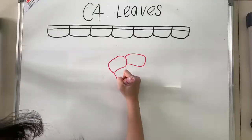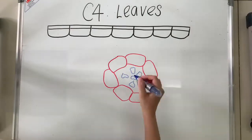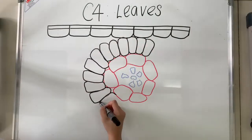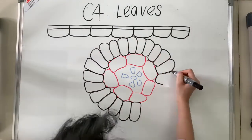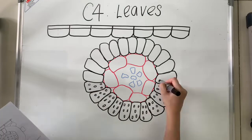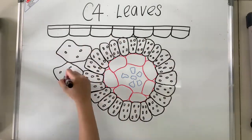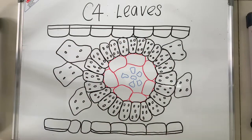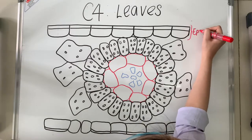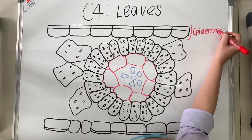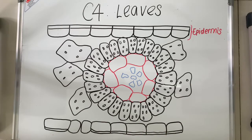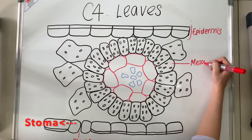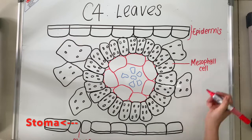Now let's move to our main point of the video: C4 plants. Let's take a look at the structure of the C4 leaves. We have the epidermis, the mesophyll cells, the bundle sheath cells, the vascular bundle, and finally, we have the stroma toward the bottom left of the diagram.